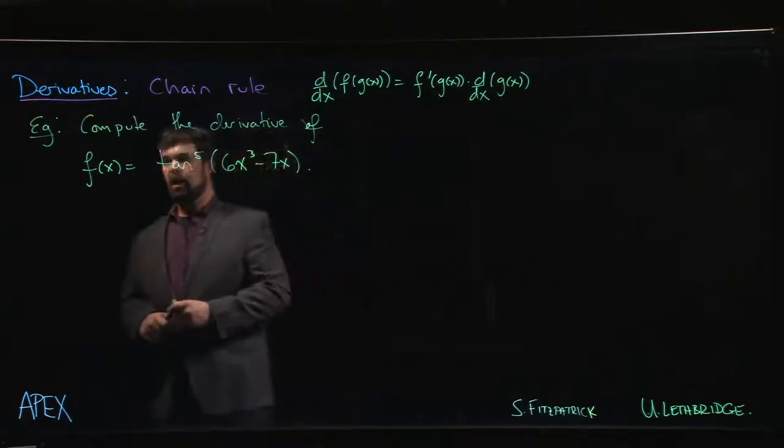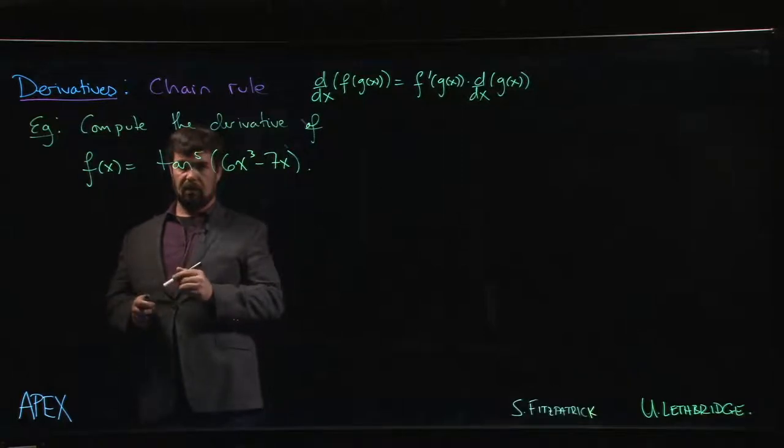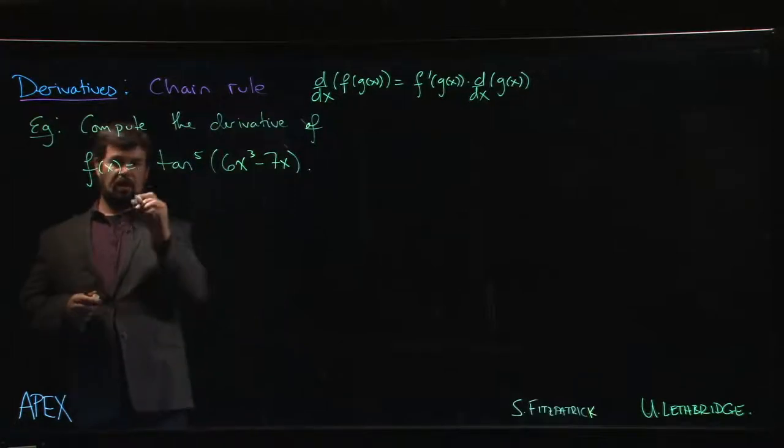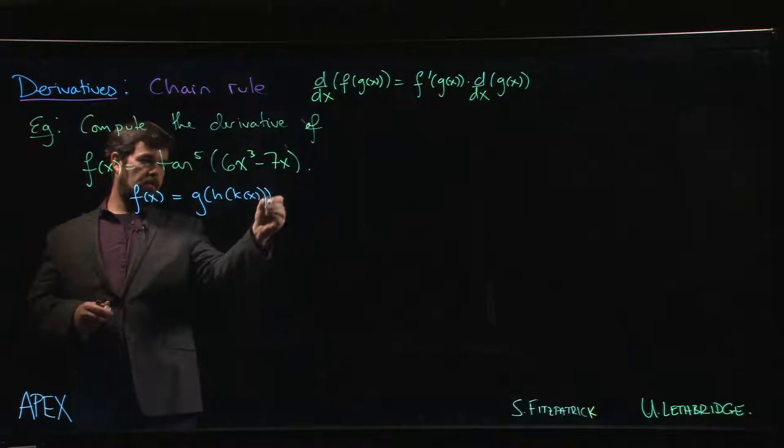Here we have tan to the fifth power evaluated at 6x cubed minus 7x. One thing we might think of here is that what we really have is f of x is like g of h of k of x.